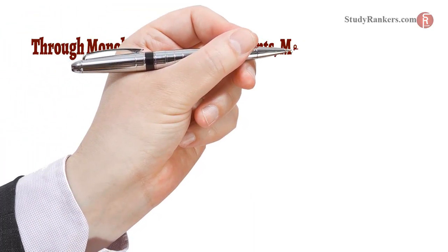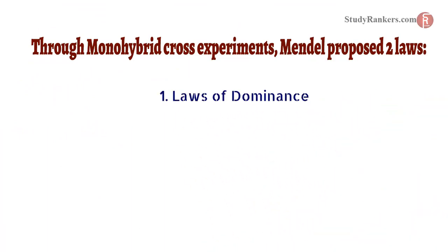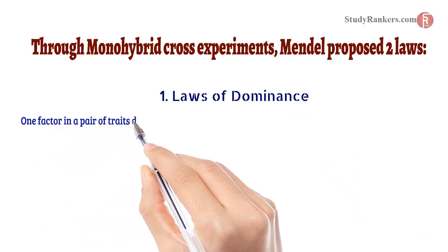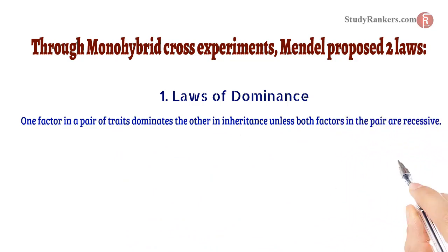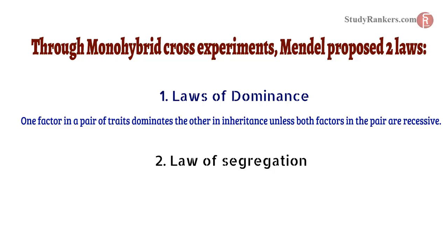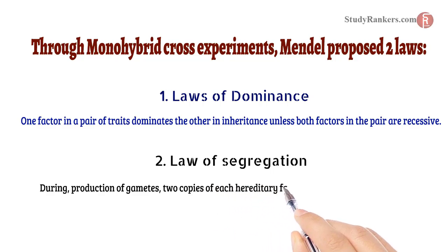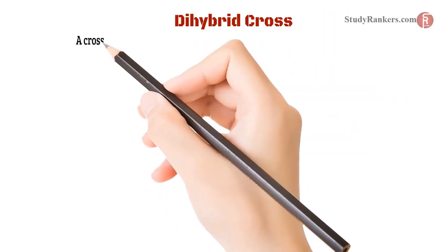Through monohybrid cross experiments, Mendel proposed two laws. The first is the Law of Dominance: one factor in a pair of traits dominates the other in inheritance unless both factors in the pair are recessive. The second is the Law of Segregation: during production of gametes, two copies of each hereditary factor segregate so that offspring acquire one factor from each parent.